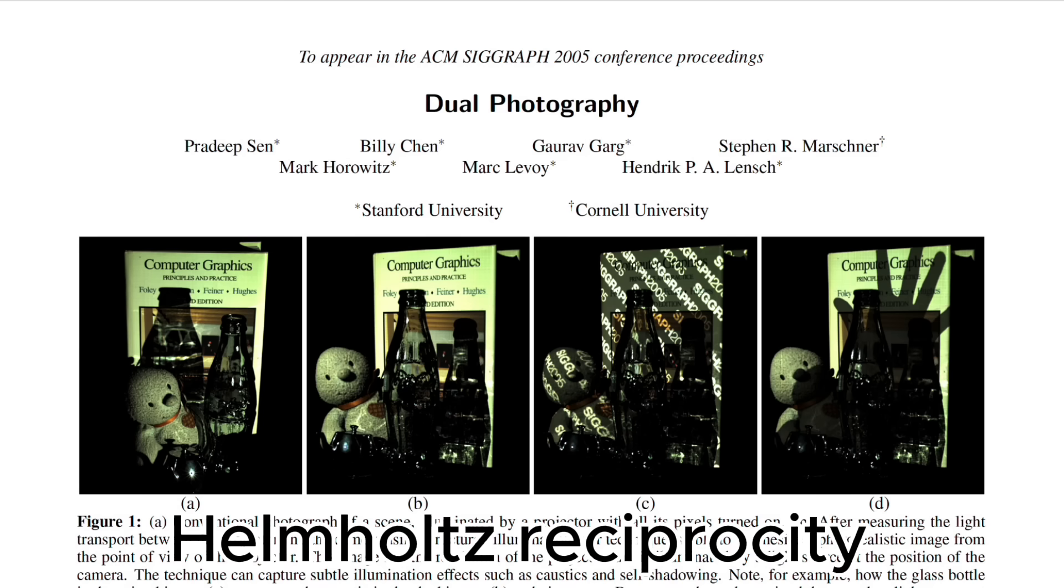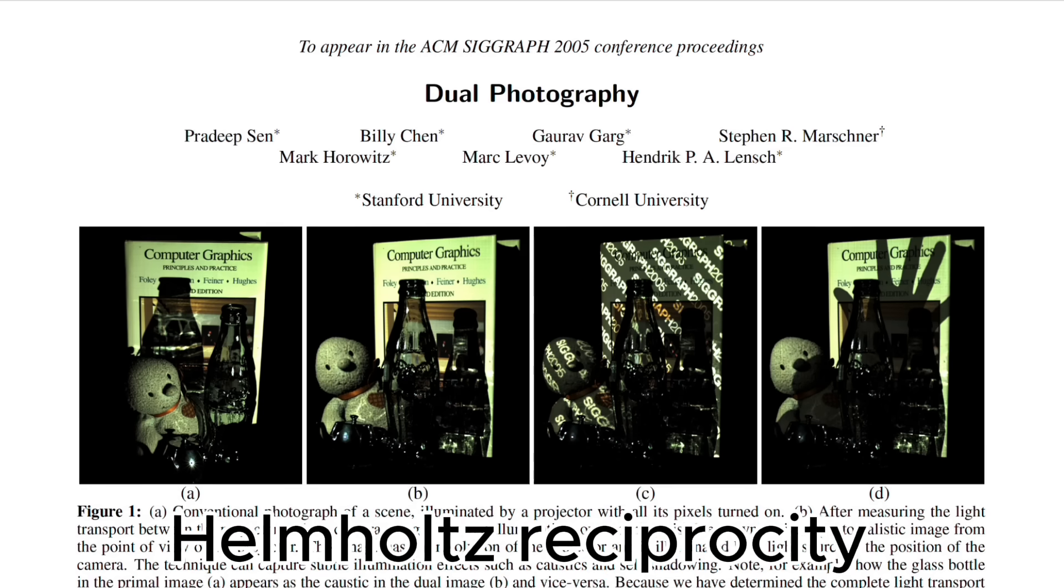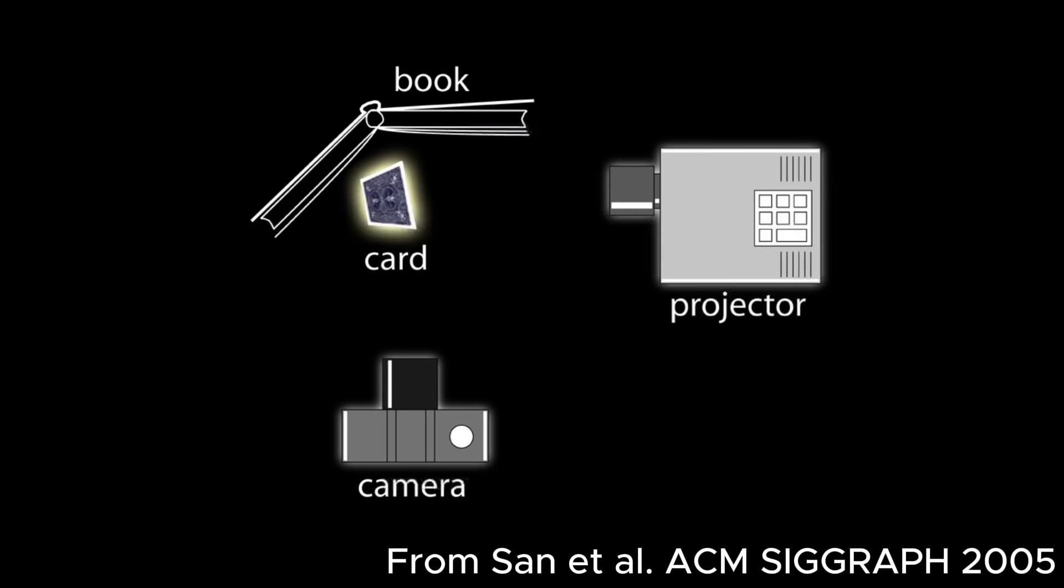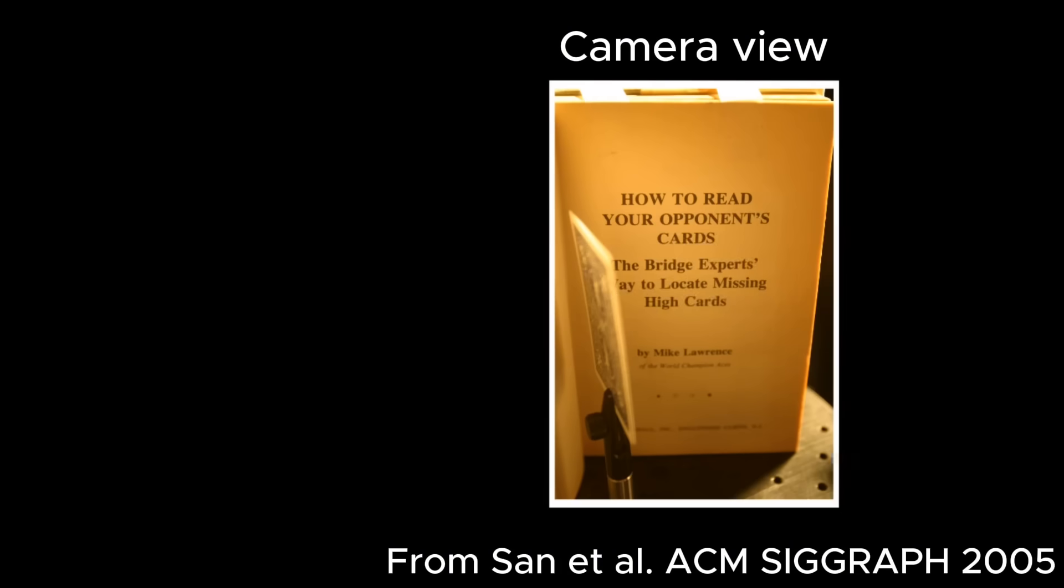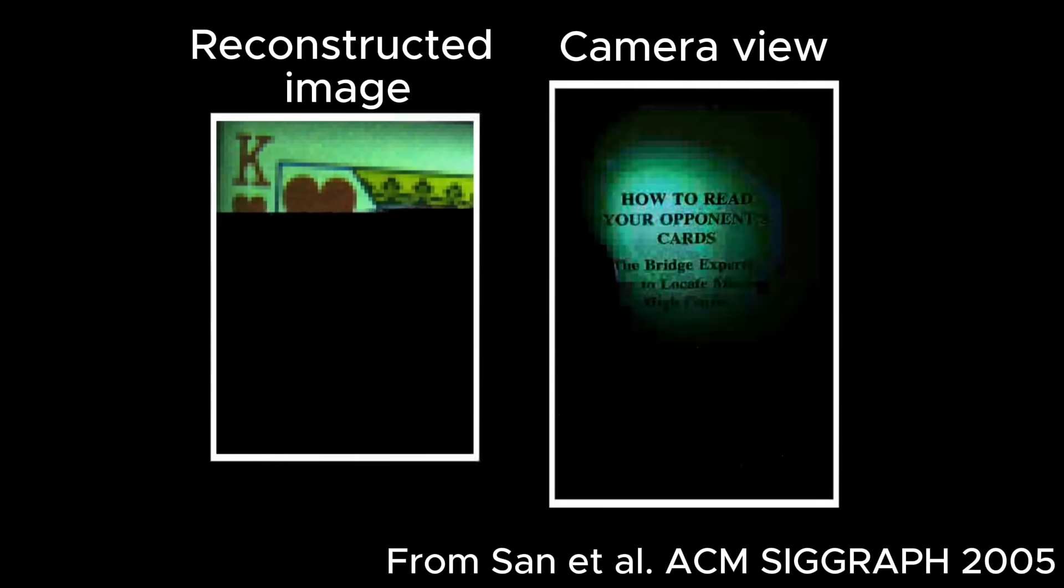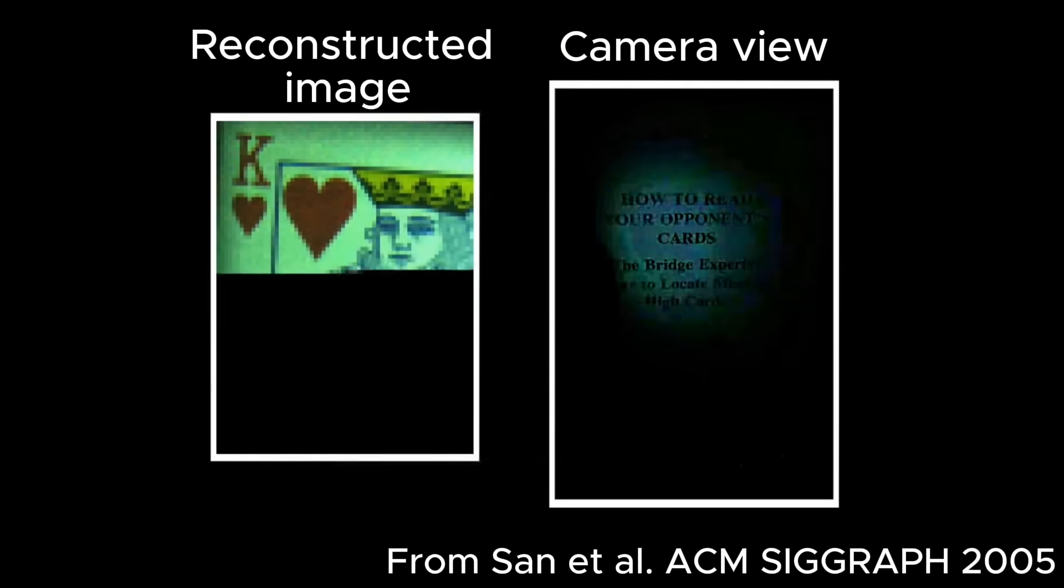But there's actually a deeper theory going on here, called dual photography, which is based in Helmholtz's Reciprocity. And some really interesting and weird stuff comes out of it, including the imaging of objects, like a playing card, that a camera can't actually see. I'll show how well I could replicate this with my setup at the end of the video.